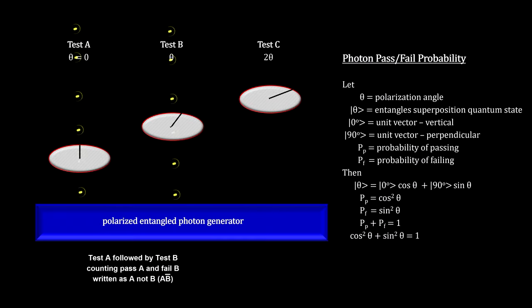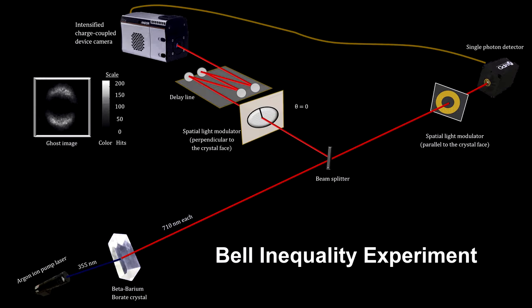We'll cover a thought experiment designed to show that hidden variables cannot exist. It's called Bell's Theorem or Bell's Inequality. We'll cover a real experiment that uses entangled photons to create ghost images that produce a Bell inequality.